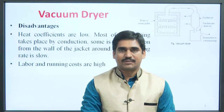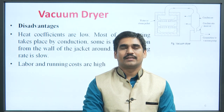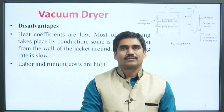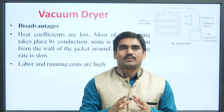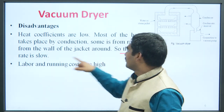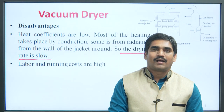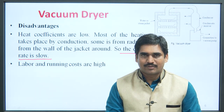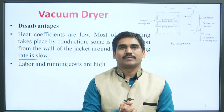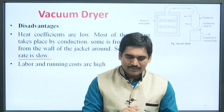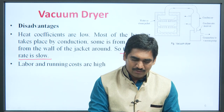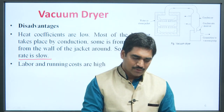Disadvantages: since heat coefficients are low, most of the heating takes place by conduction, and in some cases radiation may take place. So the drying rate is slow. The disadvantage is that drying rate is slow in the case of vacuum dryer because heat coefficients are low and heating takes place mainly by conduction. In some cases, radiation from the wall of the jacket also takes place, which leads to a slow rate of drying.